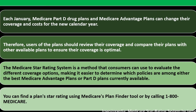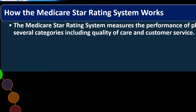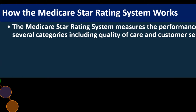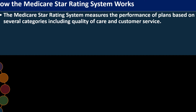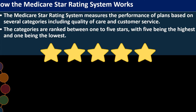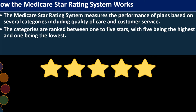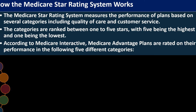You can find a plan's Star Rating using Medicare's Plan Finder tool or by calling 1-800-MEDICARE. The Medicare Star Rating System measures the performance of plans based on several categories, including quality of care and customer service. The categories are ranked between one to five stars, with five being the highest and one being the lowest. Five stars is the best — more stars is better, fewer stars is not as good.